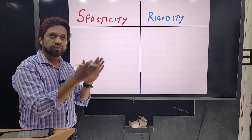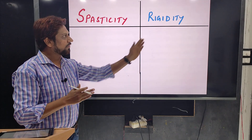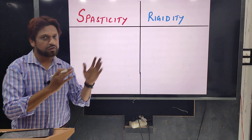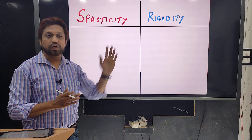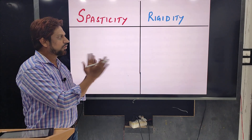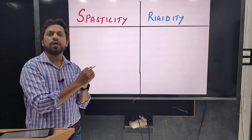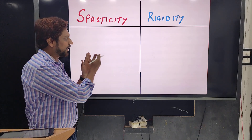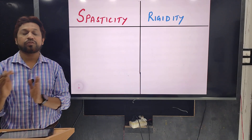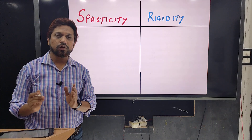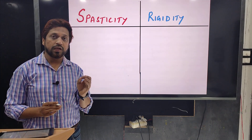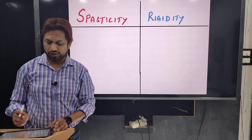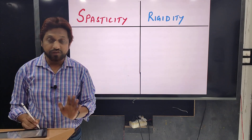Spasticity is due to lesions of certain tracts, while rigidity is due to lesions of different structures in the central nervous system. We will differentiate these two terms to make the concept clear. It is also a very important question for theory exams for MBBS students. So let us discuss the differences first.